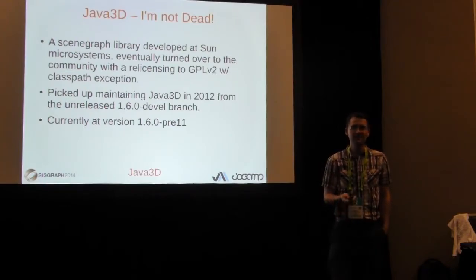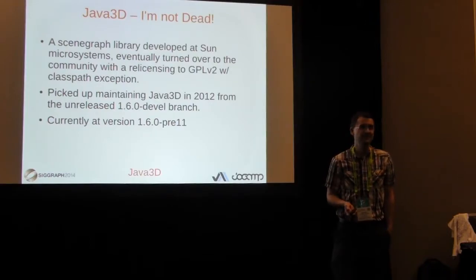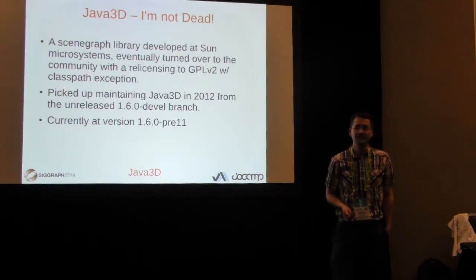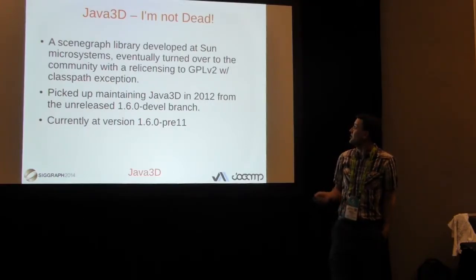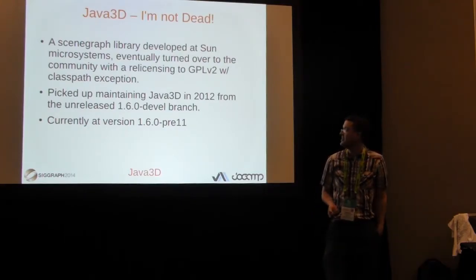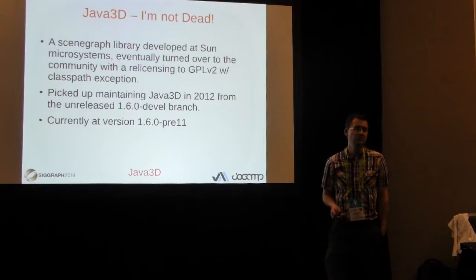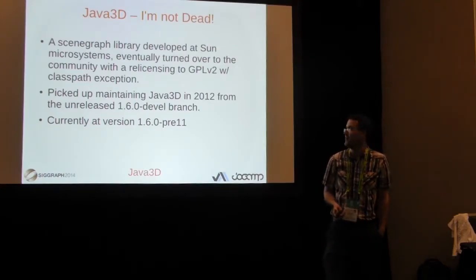Hi everyone, I'm Harvey Harrison, currently the maintainer of Java 3D. We picked it up out of necessity internally — we were using it for our simulation software to visualize everything. We did quite a few bug fixes since it was essentially abandoned upstream. Around January 2012, I released my fork and picked up the unreleased 1.6 develop branch. We're currently at version 3.11, basically with two regressions left before I put a final number on it.